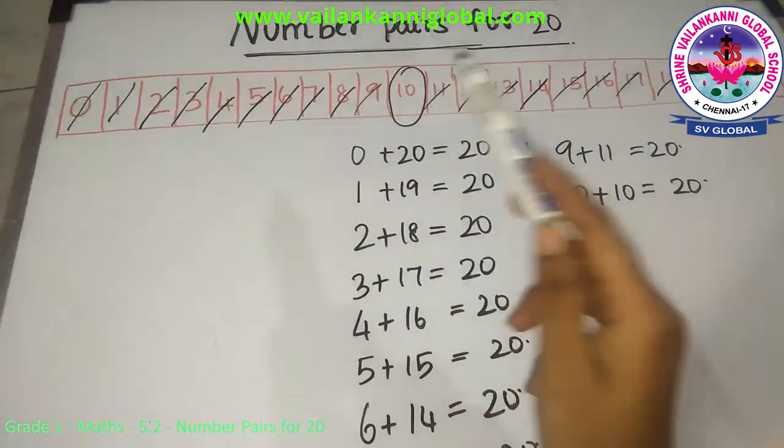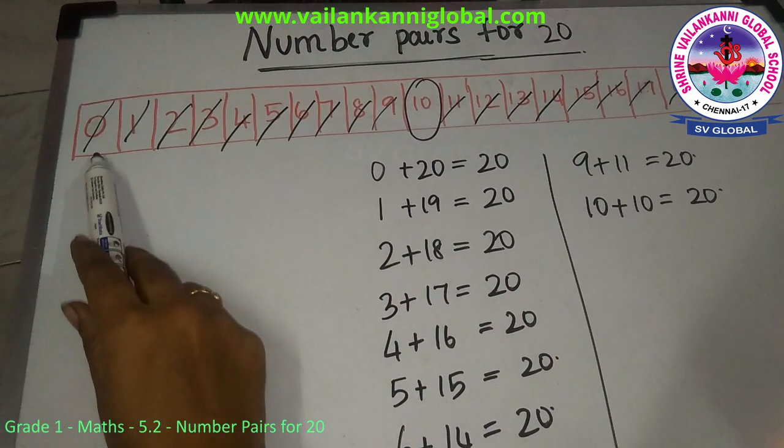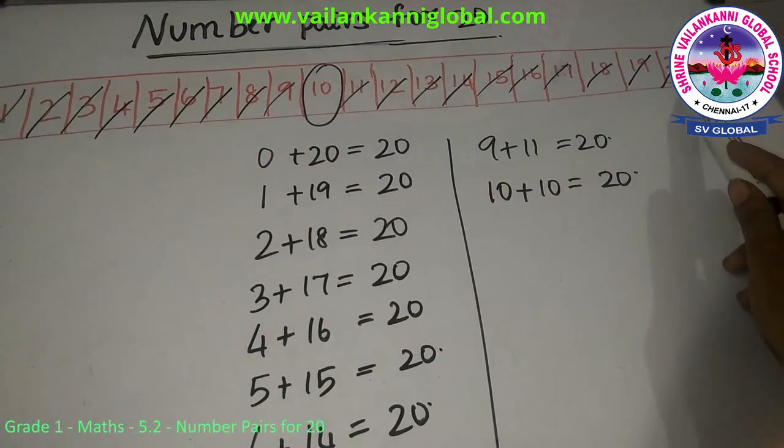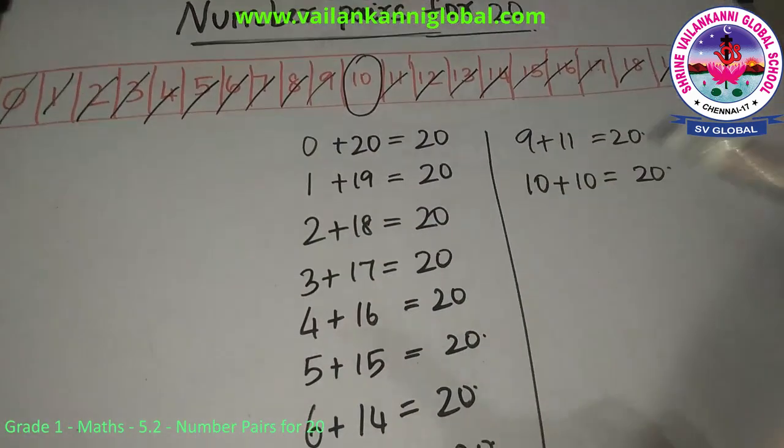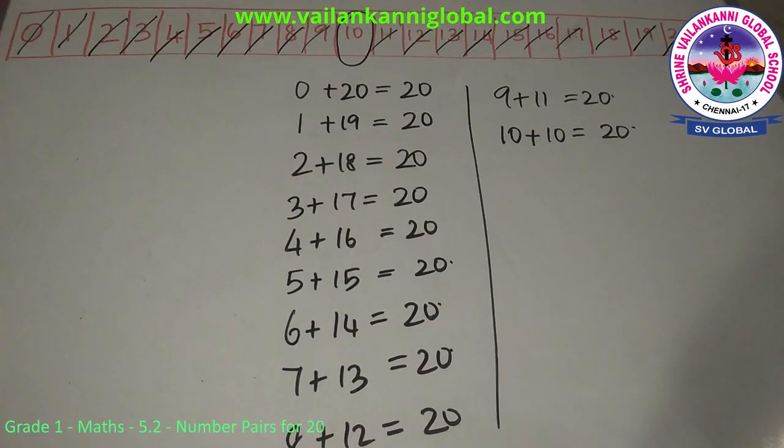Pair means two of the numbers, starting from left one number and right the last number, we are going to add, and finally we are going to find out the number pairs for 20.